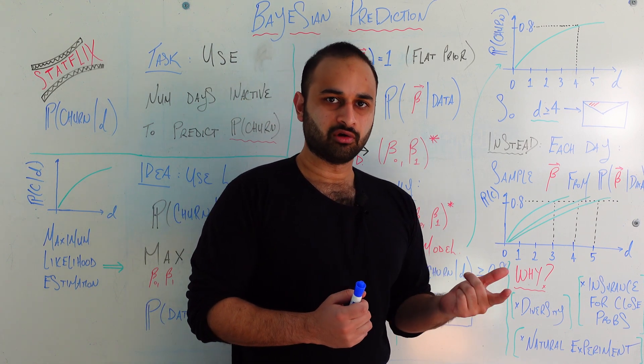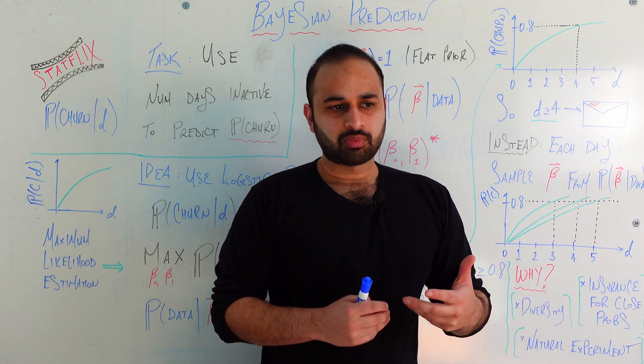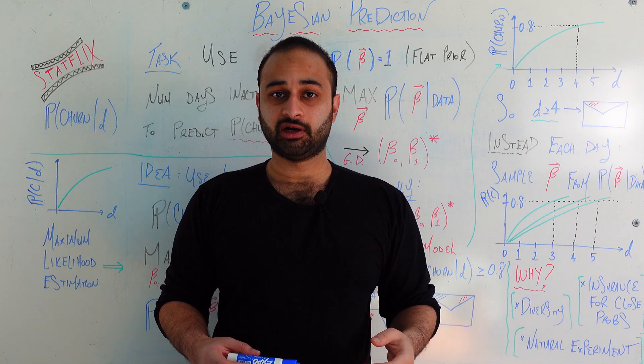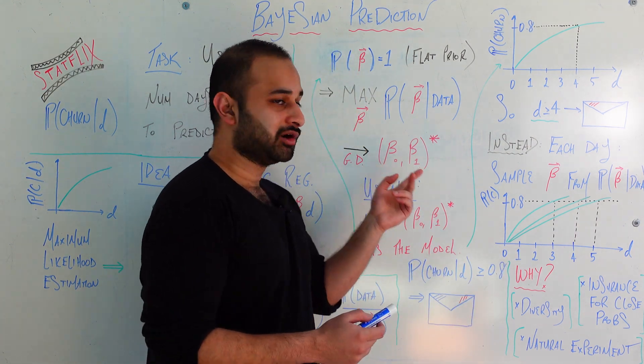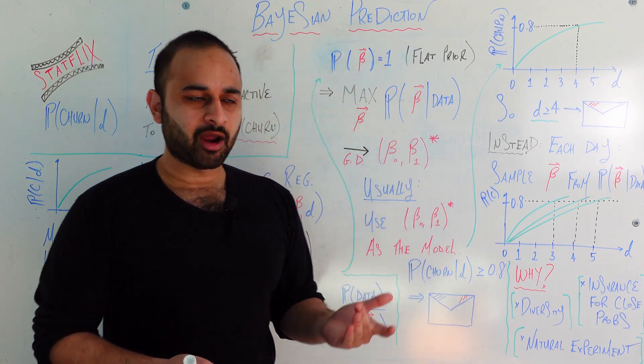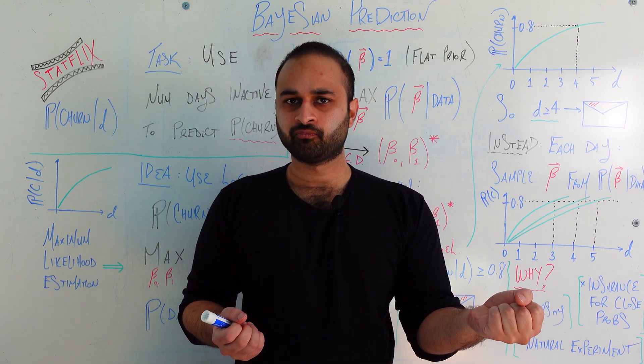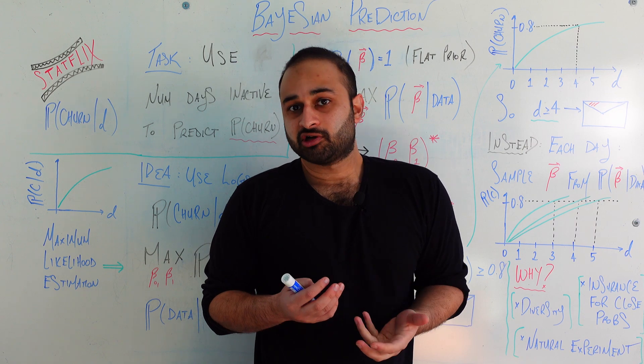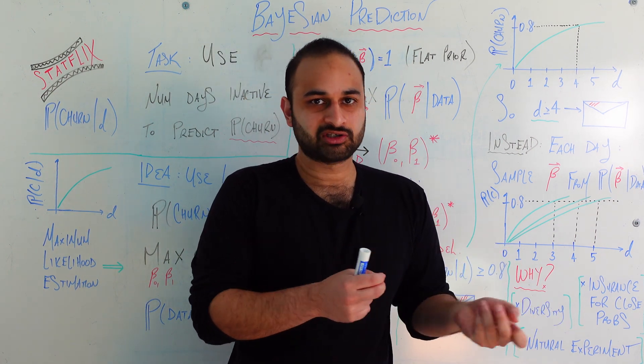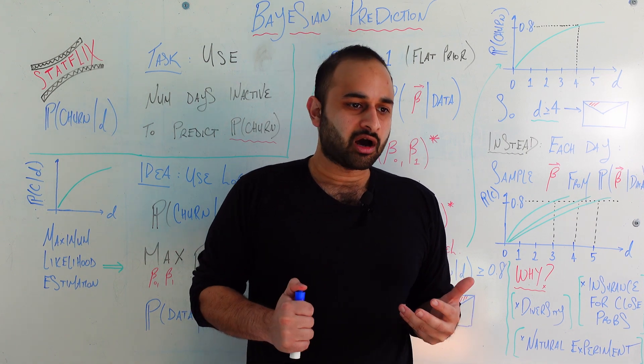And we do the very natural thing of saying, give me the beta which maximizes that probability. Makes sense. But when you think about it, what are the chances that that beta you chose, that beta naught beta one star, is truly the coefficients which generated the data that you saw in the real world? It's probably not super likely. In fact, it could have been some other beta naught beta one which still has a very high posterior probability, but it wasn't quite the maximum. And that is very much in the spirit of Bayesian thinking.